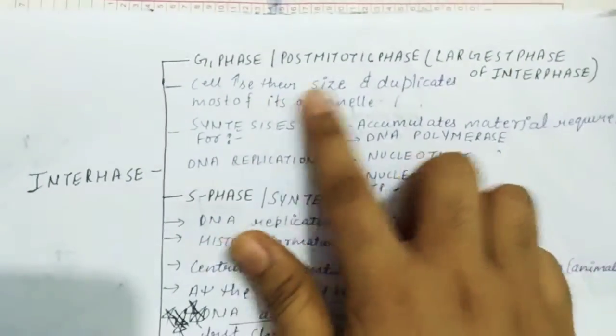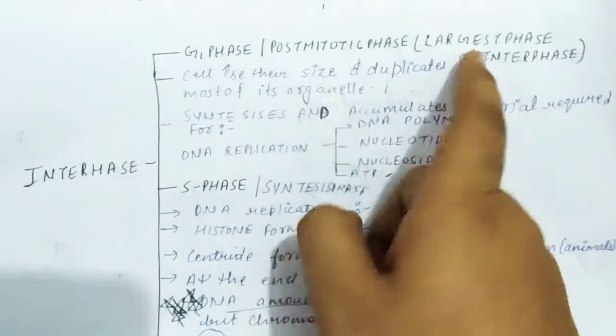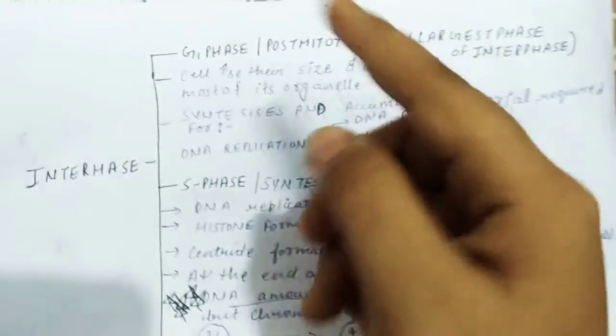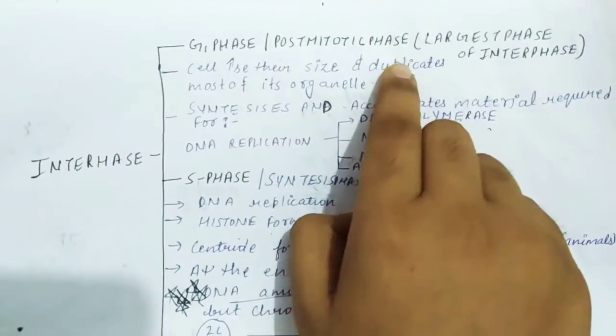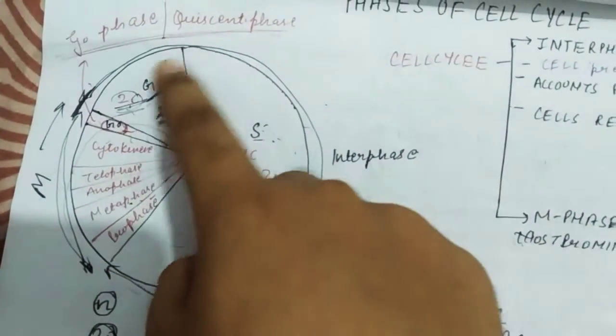G1 phase means post-mitotic phase. Why does it mean post? Post means after. Mitotic means M phase. The phase after M phase is G1 phase. You can see that G1 phase is called post-mitotic phase. In this diagram, we have seen that the phase after M phase is G1 phase.